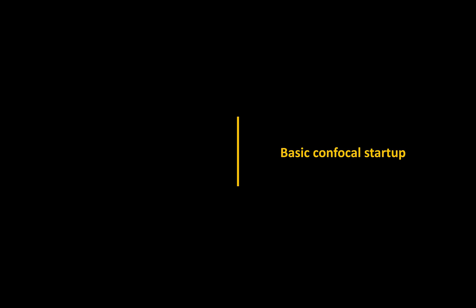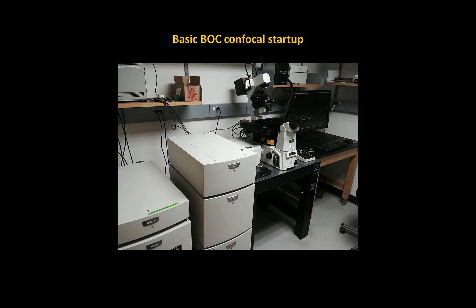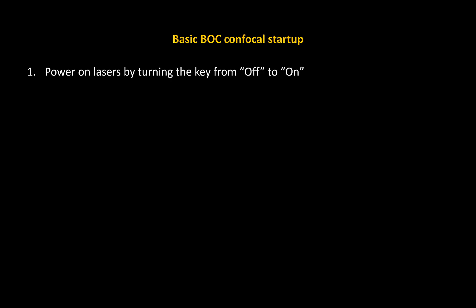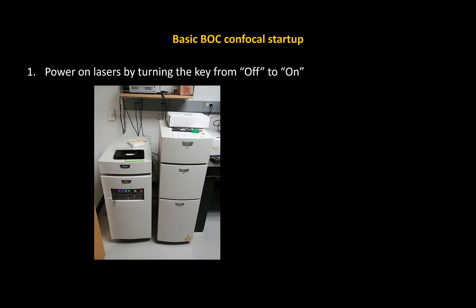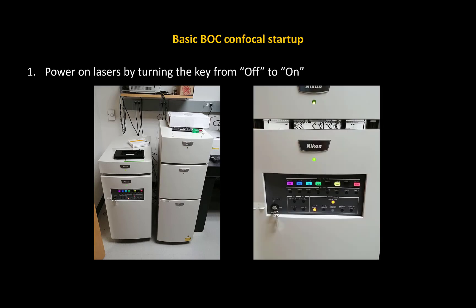Let's talk about basic confocal startup steps. This is a picture of the confocal microscope in the box. The first step is to power on the lasers by turning the key from off to on. There's a laser power key right here — just turn it from off to on. The laser buttons will light up and start blinking as they warm up. You can proceed to the next step without waiting for them to stop blinking.